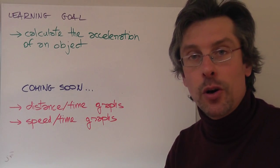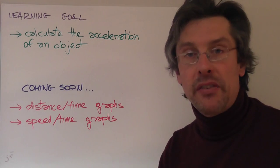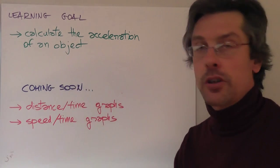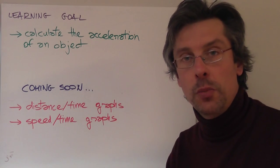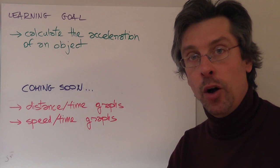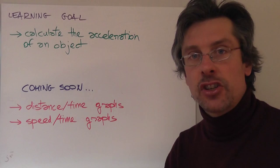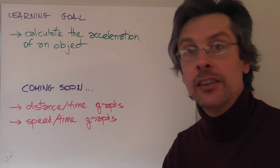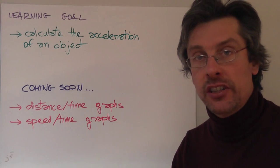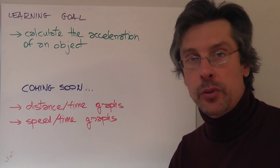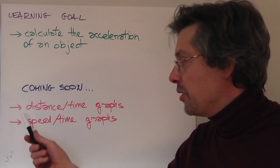So what was the learning goal of this lesson? By the end of this lesson you should be able to calculate the acceleration of an object by using the formula we saw at the beginning and also in general to tell that acceleration is a change of speed and or a change in direction. Next, we are going to see how we can represent movement by using distance over time graphs or speed over time graphs.